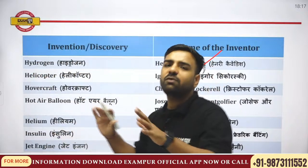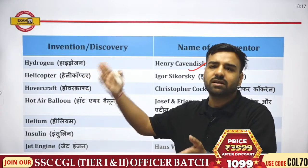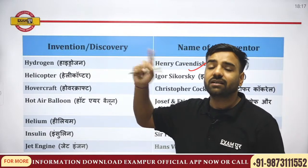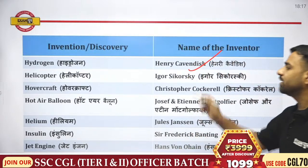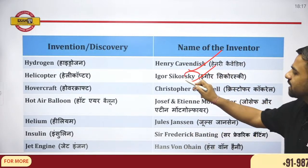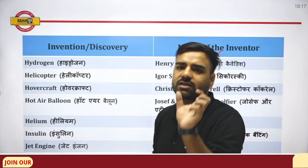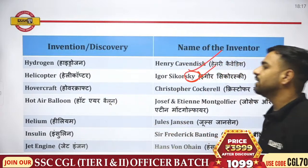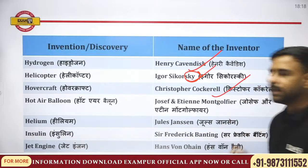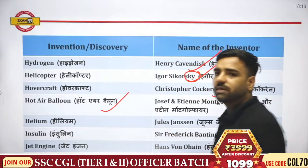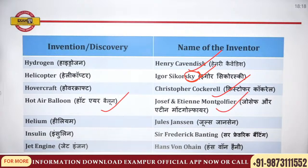Helicopter — the trick is: helicopter is used in the sky, and from the name Igor Sikorsky you can get 'sky.' So when you see a sky-related option, that is the answer. Sikorsky invented the helicopter. Hovercraft was discovered by Christopher Cockerell. Hot air balloon was discovered by Joseph Montgolfier.